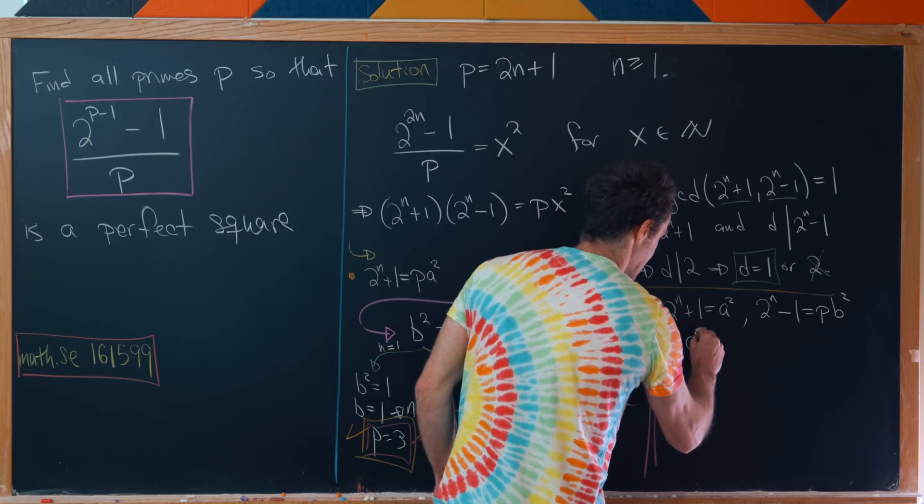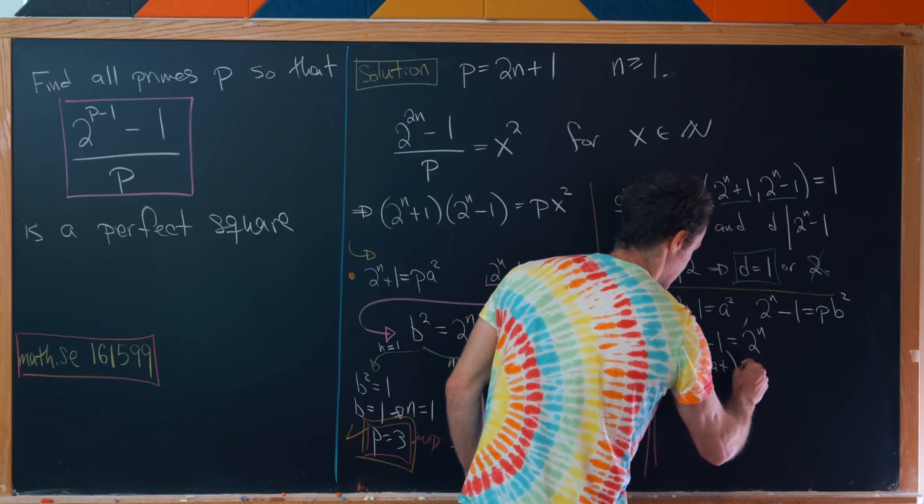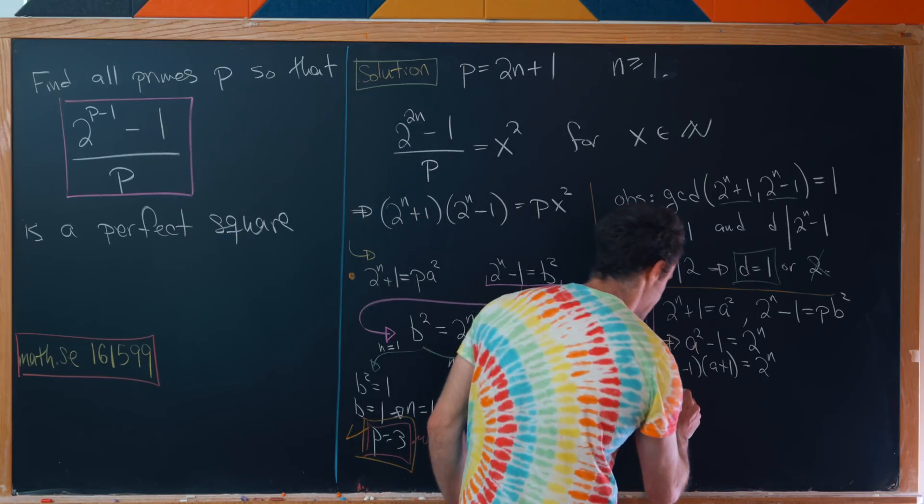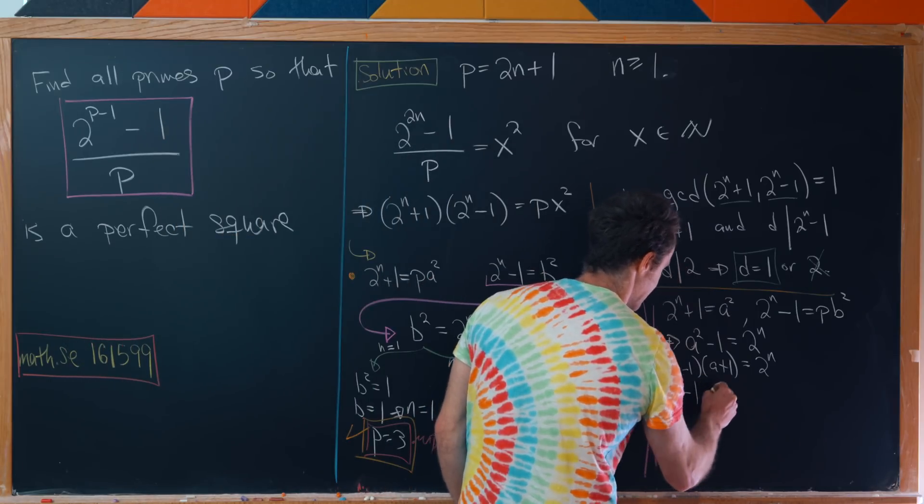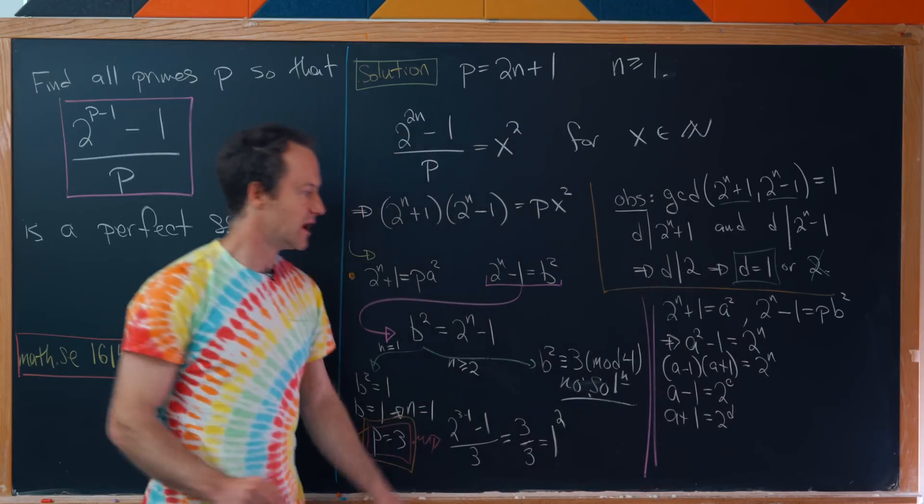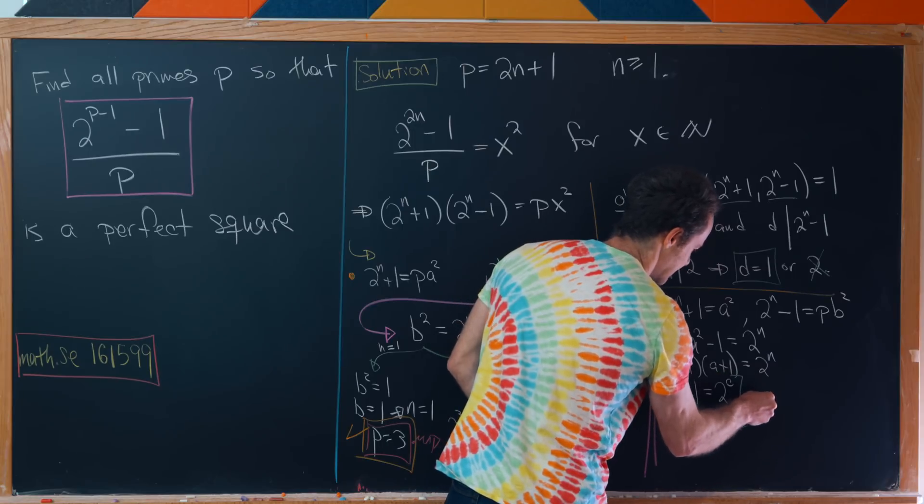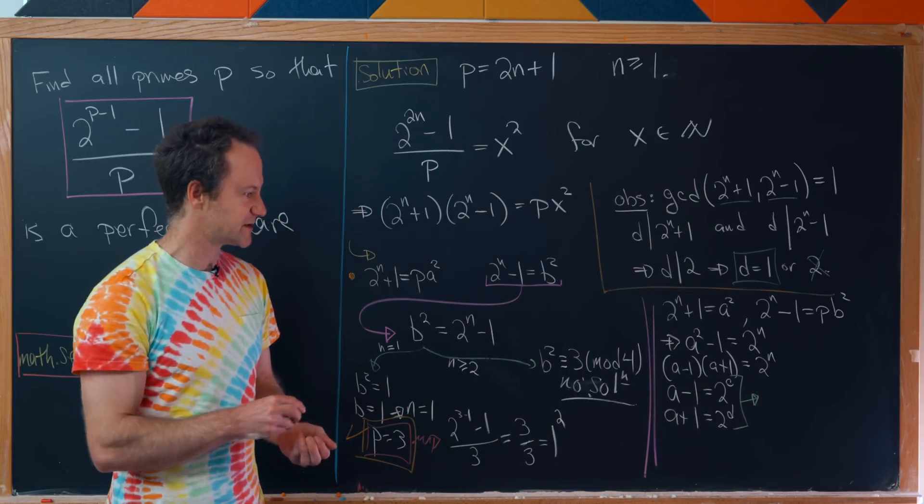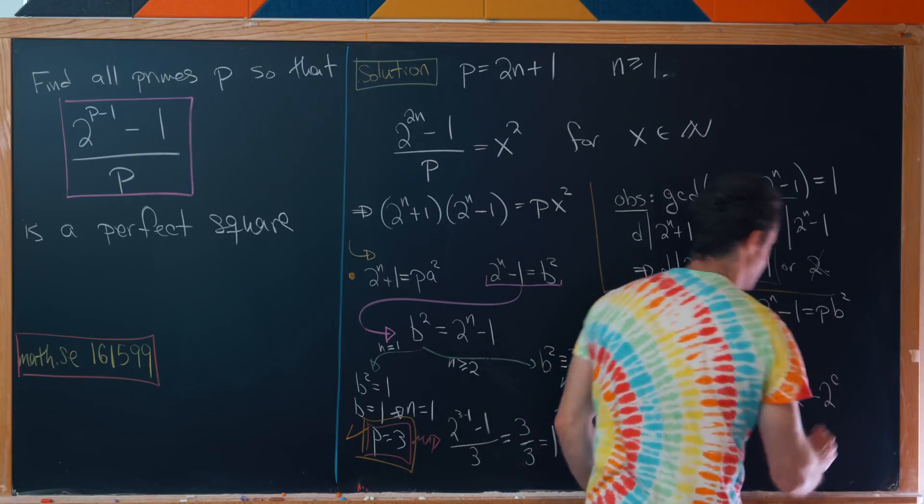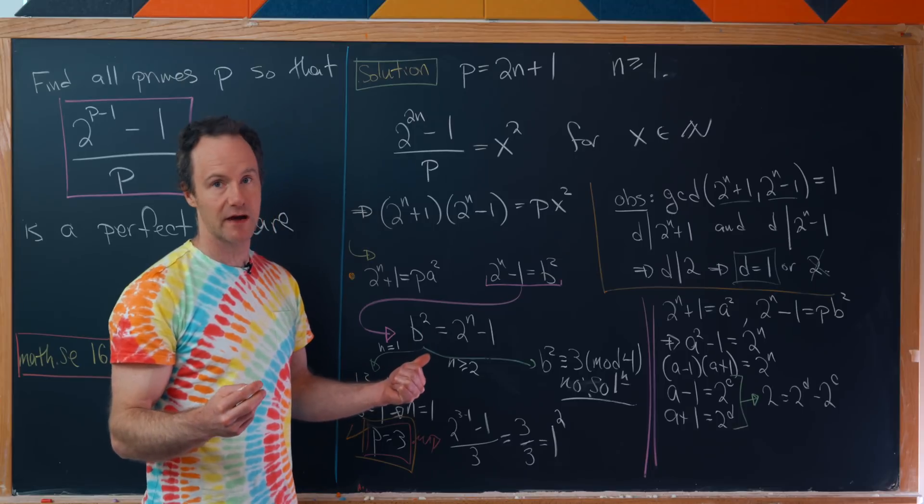We're going to work off of 2^n + 1 equals a^2. That tells us a^2 - 1 is 2^n, so we can factor: (a - 1)(a + 1) equals 2^n. If the product of those two things is a power of 2, then each one is a power of 2. So a - 1 equals 2^c and a + 1 equals 2^d. Now we could subtract those two equations and we'll get 2 equals 2^d - 2^c.